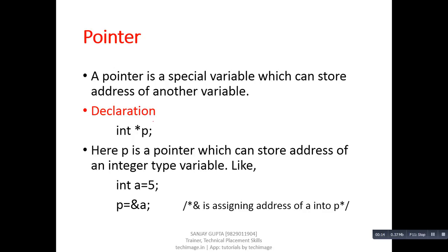To understand pointers, we can take this example. It is a pointer declaration. To declare a variable as a pointer, we have to use the asterisk symbol. Here, p is a pointer which can store the address of an integer type variable. Suppose there is a variable a and its value is 5. Now we are trying to assign the address of a into p. This ampersand symbol is known as the address-of operator, which assigns the address of any particular variable inside a pointer.